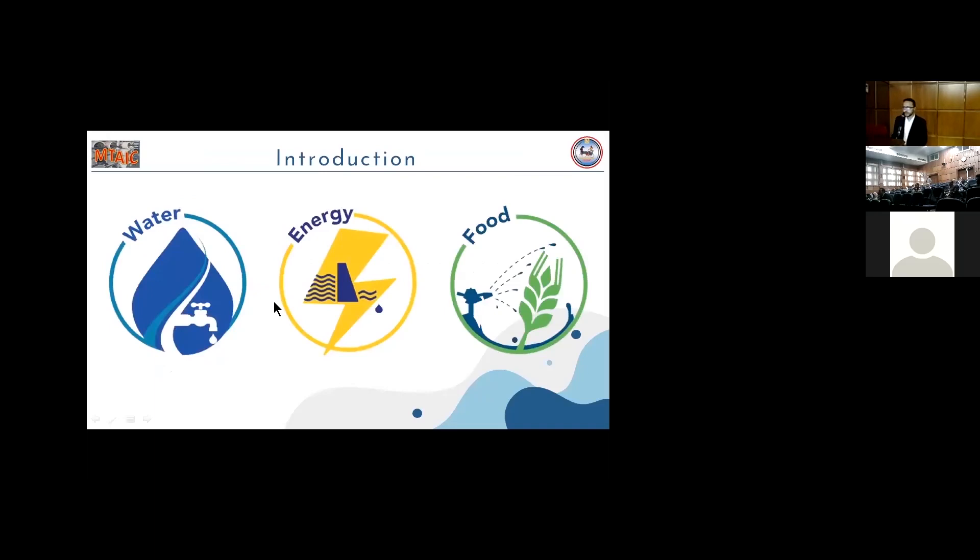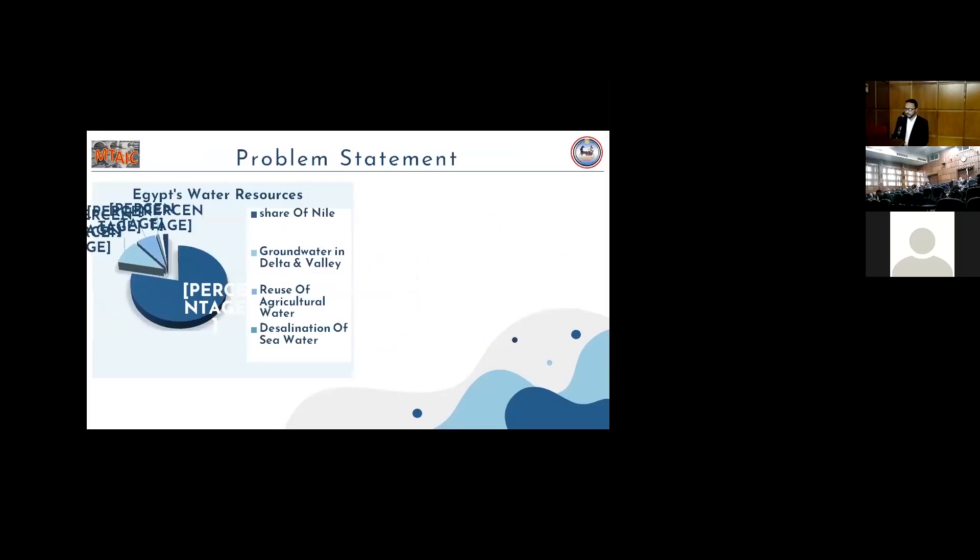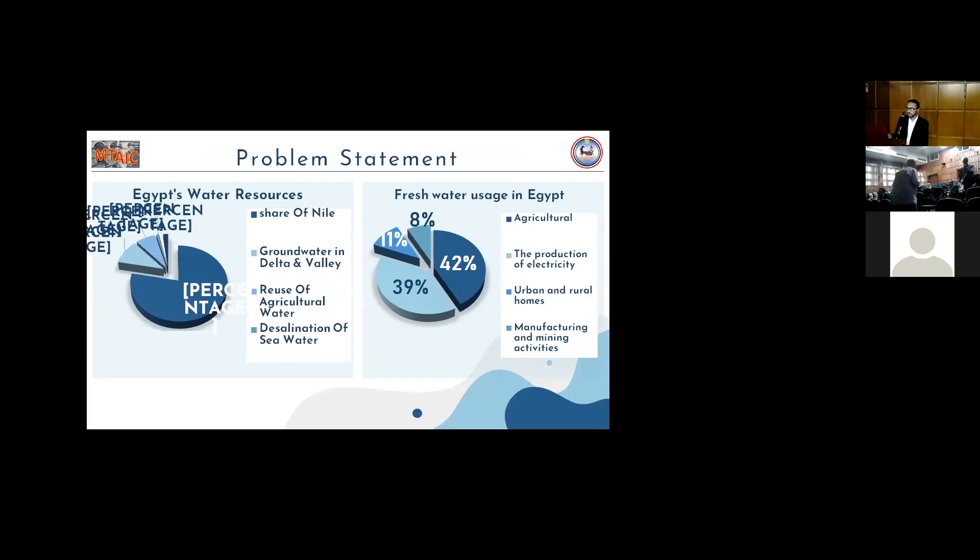Nowadays, water, energy, and food are the main concerns globally. The Nile River is the main source of freshwater in Egypt, and the scarcity is represented in the freshwater and energy.